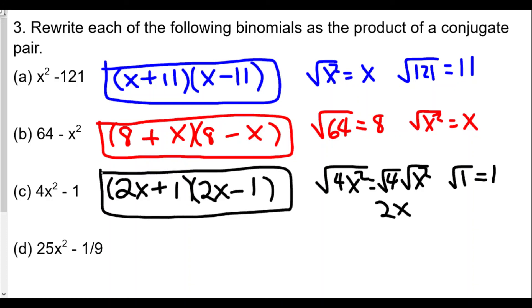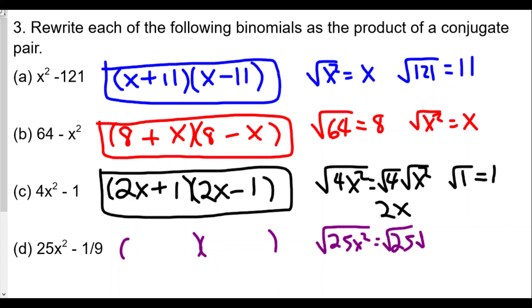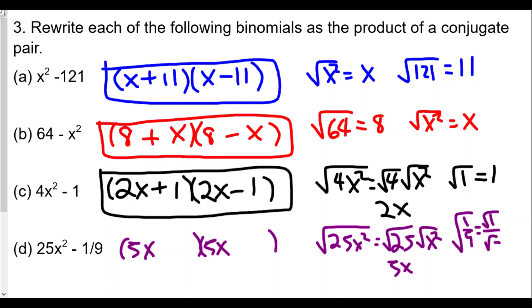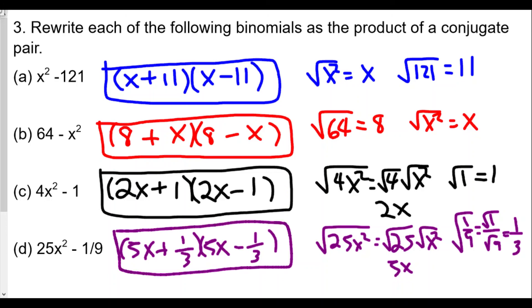For part (d), 25x² − 1/9: √(25x²) = √25 · √(x²) = 5x, and √(1/9) = √1 ÷ √9 = 1/3. So the conjugate pair is (5x + 1/3)(5x − 1/3), which matches 25x² − 1/9.